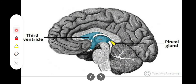The pineal gland is connected with the diencephalon by the pineal stalk. In the superior portion of the stalk we have the habenular commissure, and in the inferior portion we have the posterior commissure. The pineal gland has pinealocytes which secrete melatonin, and it also has some glial cells. Within the pineal gland there are calcium concretions which we call brain sand. The cavity of the stalk also contains the cavity of the third ventricle.